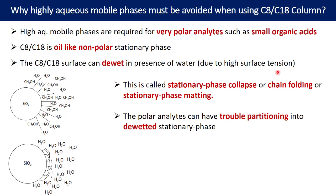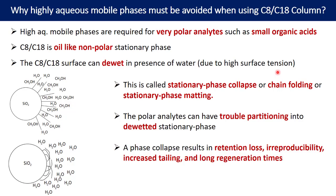When the stationary phase is de-wetted and collapsed, polar analytes will have trouble partitioning into it. As it is collapsed and not open, none of the analytes can interact with the stationary phase. Phase collapse results in retention loss, irreproducible retention time, and increased tailing. It also takes more time to regenerate the column back from the de-wetted to the wetted state.